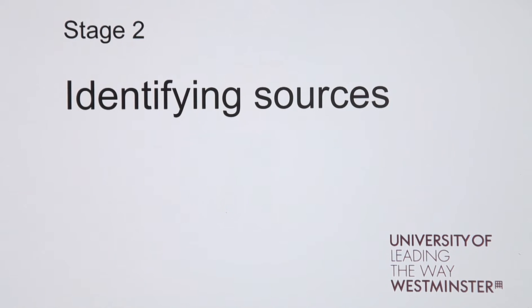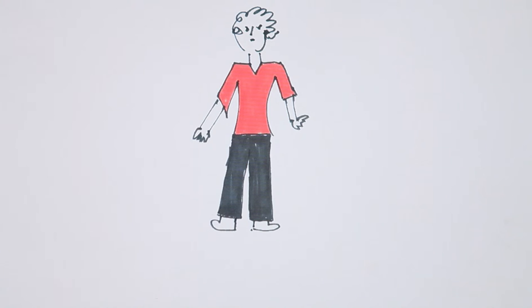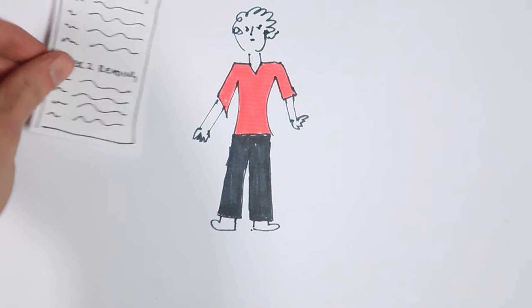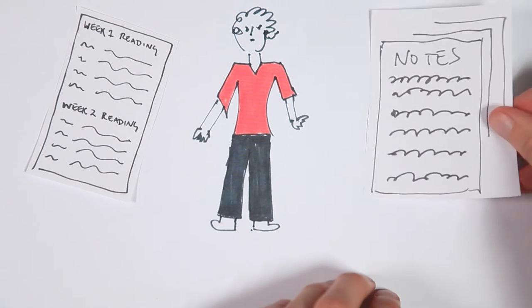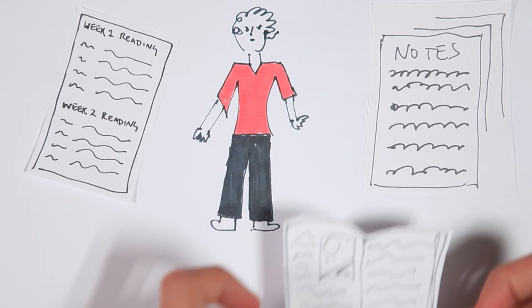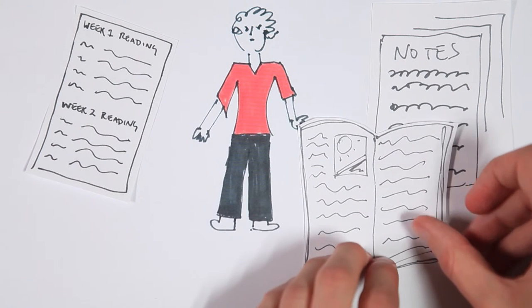Stage two, identifying sources. Before finding resources, Dave needs to think about what he has already read. He looks through his reading list, notes from the lectures and seminars he has attended, and textbooks.